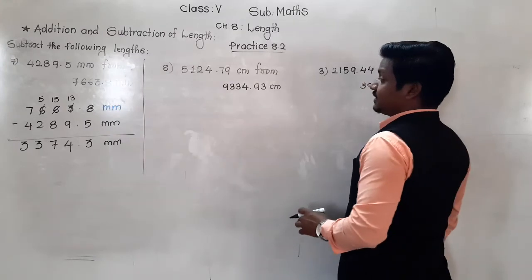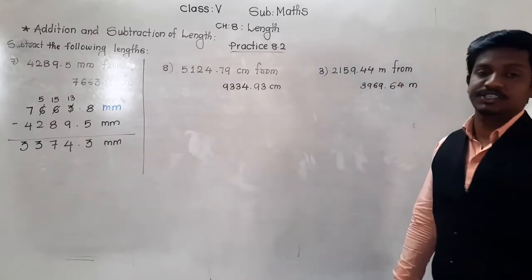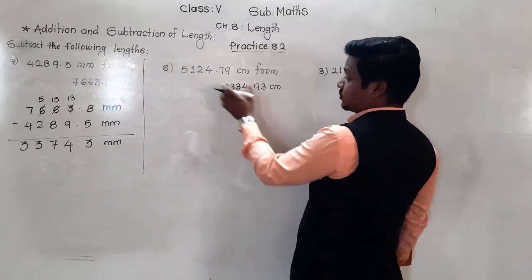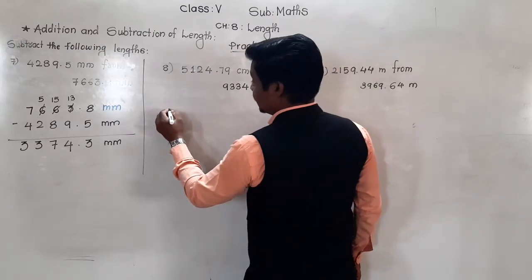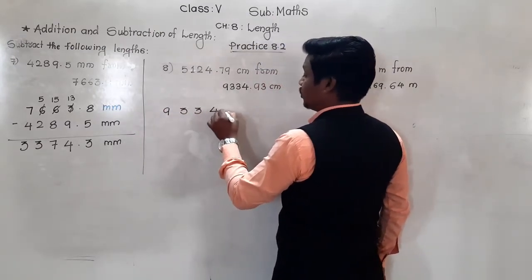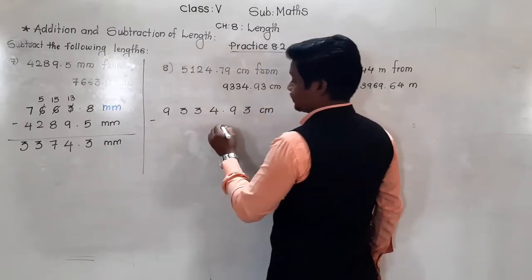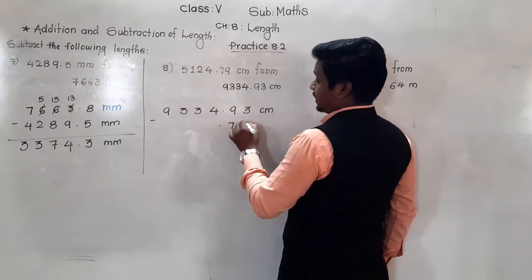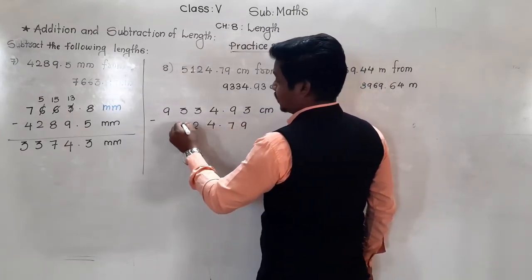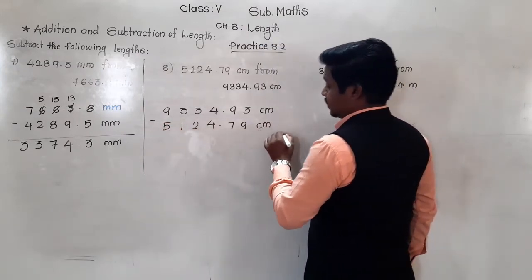Next: 5124.79 centimeter from 9324.93 centimeter. So see this is greater length, this is smaller. So this should be written up: 9324.93 centimeter minus 5124.79.